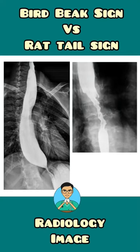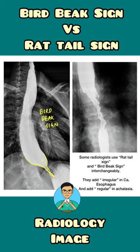In the left hand side image we can see a barium swallow of the esophagus where the esophagus uniformly narrows down. This uniform narrowing of the esophagus resembles the beak of a bird, and hence is known as the bird peak sign. That is seen in case of achalasia cardia.